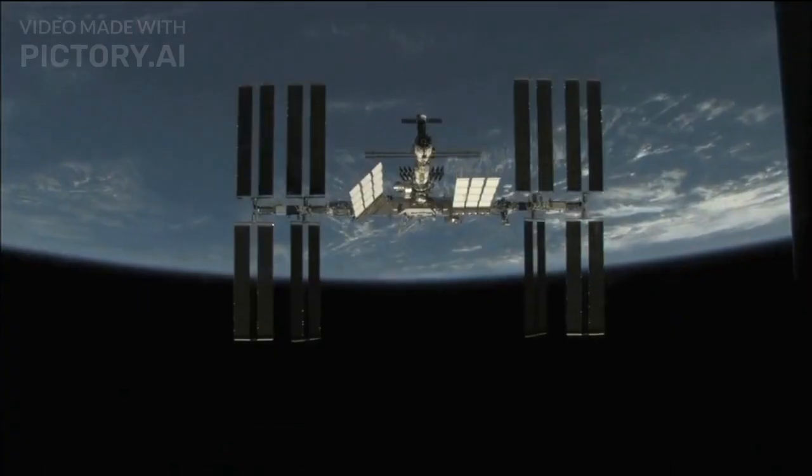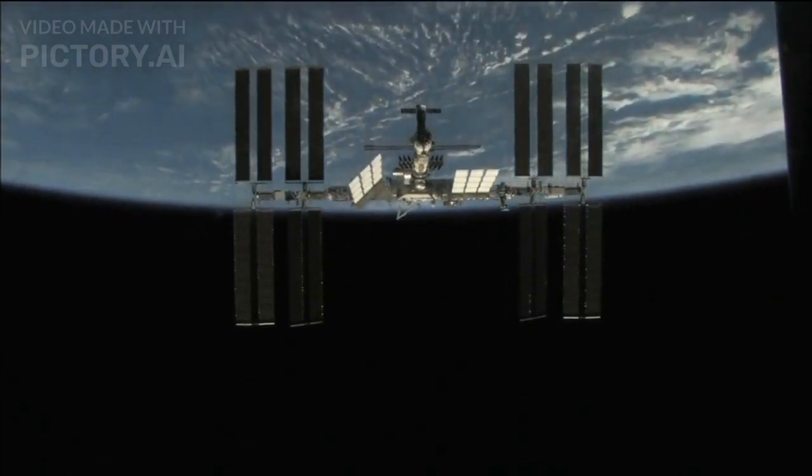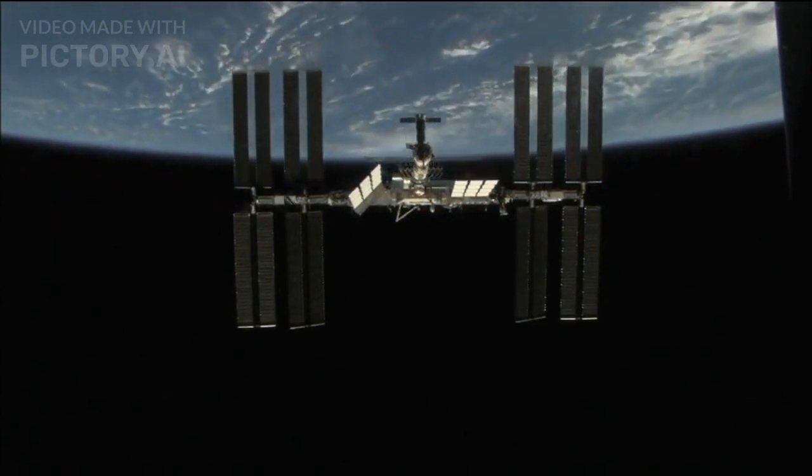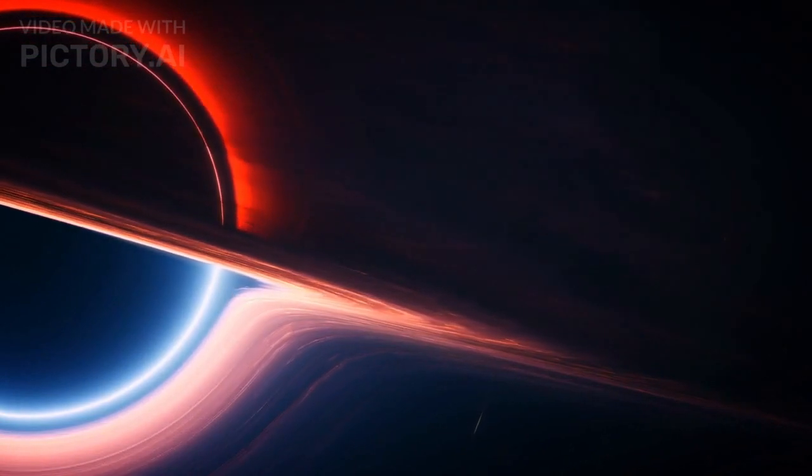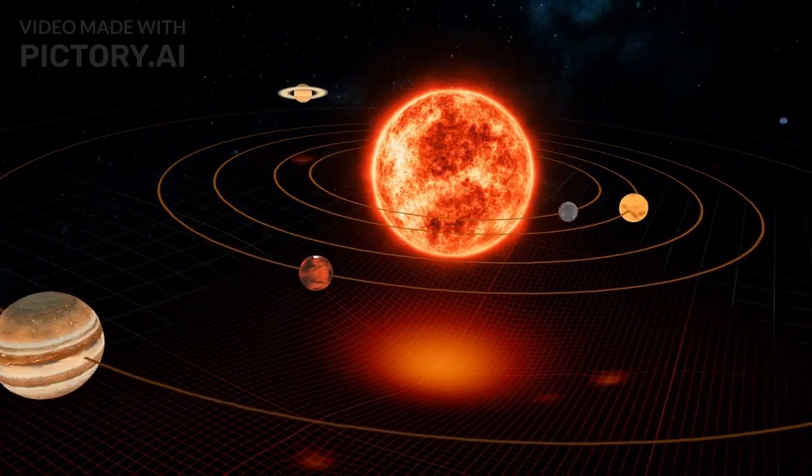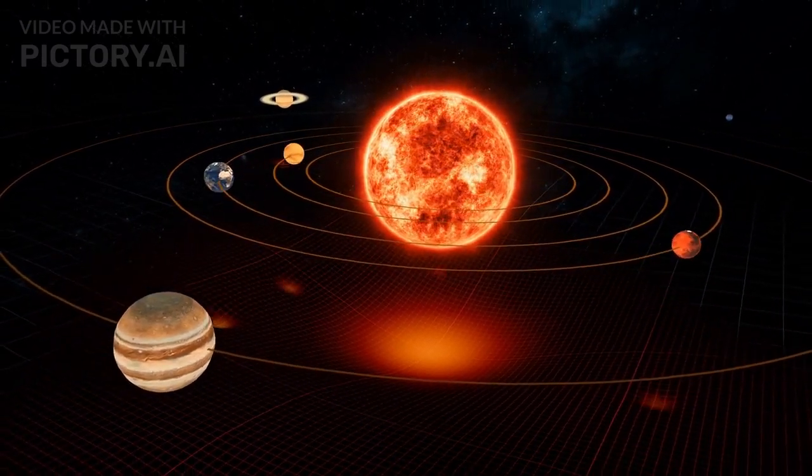Tales of the event horizon often stir curiosity and fear. Can one go past it and return? A hypothetical scenario might involve extending a pole from our ship beyond the event horizon and retracting it. As fascinating as this sounds, the very nature of space-time around the event horizon would resist such an action. The rod would face extreme gravitational forces, leading to potential breakage or other unpredictable outcomes.